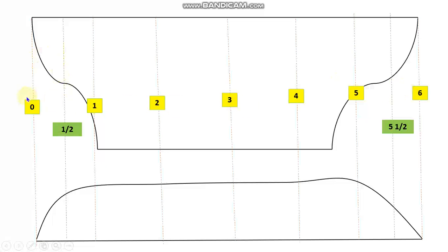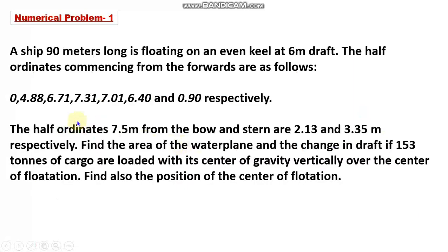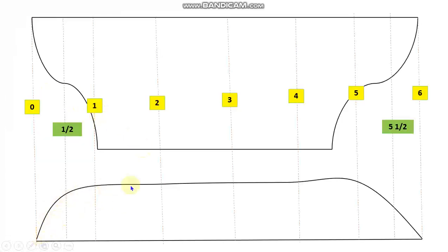There is a half station from bow and a half station from aft. Because they fall between stations zero and one, and between stations five and six, they are numbered 0.5 and 5.5 respectively. This question therefore has six full stations shown in yellow and two half stations shown in green. Students often get confused between half stations and half ordinates — half coordinate simply refers to the half-section view of the vessel from the top.